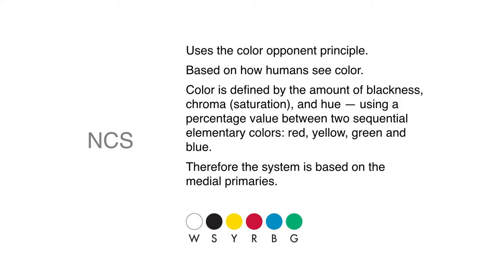And again, it's a color solid. It's a spherical volume idea. Color becomes defined by the amount of blackness, the amount of chroma, and the hue. So again, it's more value, hue, and intensity. But it looks at percentages between various colors.